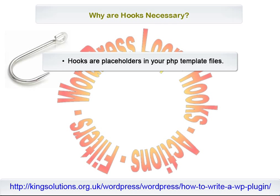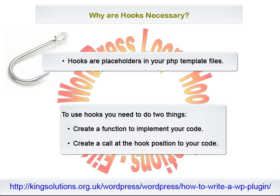Why are hooks necessary? Like any major piece of software, WordPress continuously evolves. Without hooks, if you wanted to change or extend some functionality of WordPress, you would have to modify core WordPress files every time a new version of WordPress was released. Thanks to hooks, you can upgrade both WordPress and your plugin knowing that your coding is separate and will continue to operate as specified. To use hooks, you need only do two things: create a function to implement your code, and create a call at the hook position to your code. Once you see how easy WordPress has made this task, you'll be both surprised and amazed.